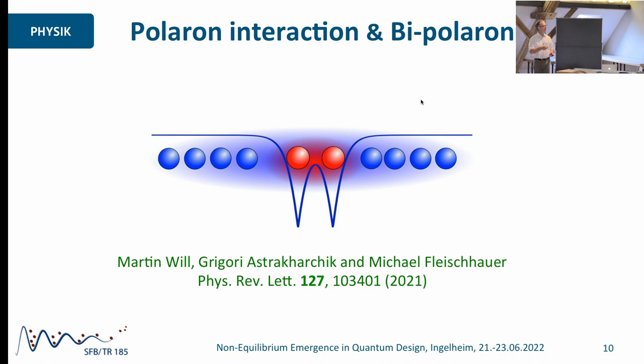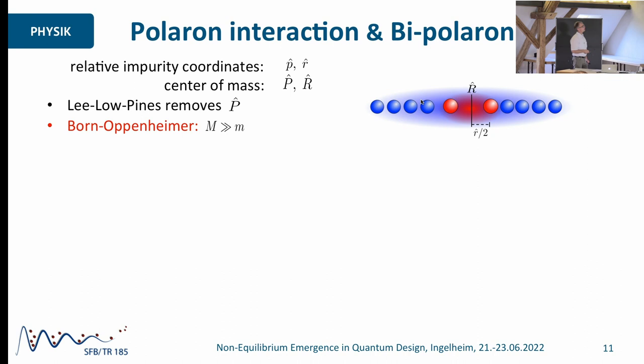So let's go to a bit more interesting problems. Let's have a look at what happens if you have two of these impurities and look at the interaction between the two. Why is that interesting? Consider two fermions and consider this is some sort of environment where you want to make the fermion-fermion interaction stronger — for example, in the context of high-TC superconductivity, that was one of the ideas people had to explain what's going on there.